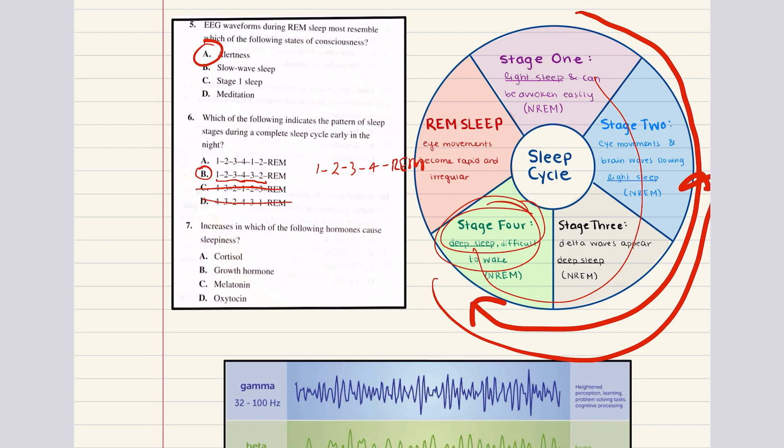Seven says increases in which of the following hormones causes sleepiness. We have cortisol, growth hormone, melatonin, or oxytocin. As light diminishes throughout the day, the pineal gland increases secretion of melatonin and that results in sleepiness. So the answer for seven is C. Cortisol levels increase throughout the early morning and they help with wakefulness. Growth hormone secretion peaks during slow wave sleep. Oxytocin is associated with uterine contractions and childbirth, milk letdown, and bonding behavior. So it doesn't have anything to do with sleepiness. The answer for seven is C.